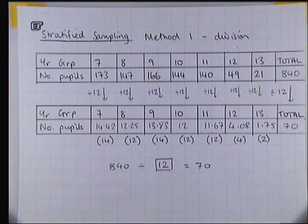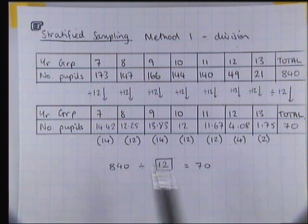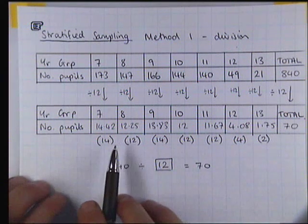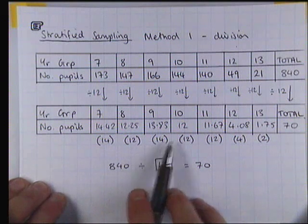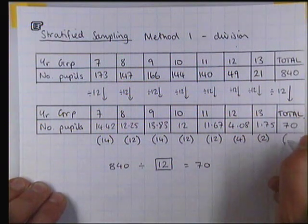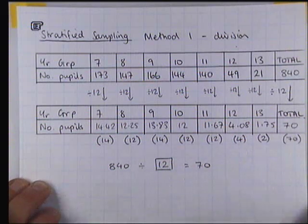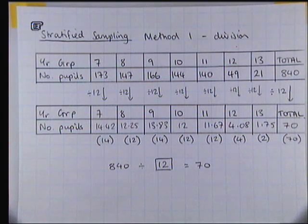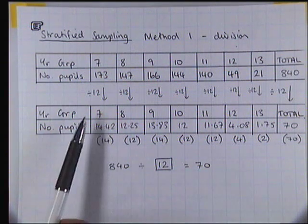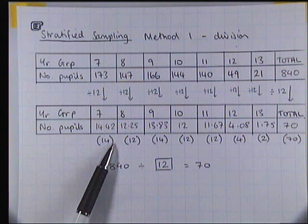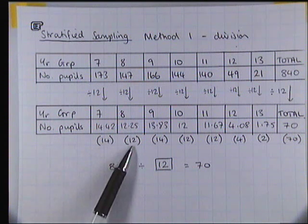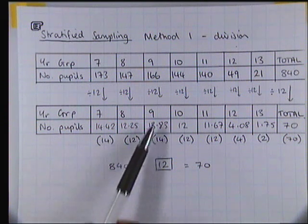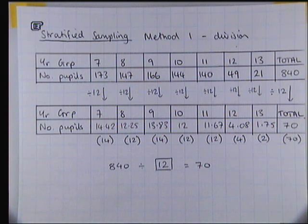Let's just check what these rounded figures add up to. We've got 14 plus 12 plus 14 plus 12 plus 12 plus 4 plus 2. They do indeed make 70, which is good. So this means the total number of year sevens that this person wants to ask will be 14. The total number of year eights that this person will want to ask is 12. Total number of year nines is 14, etc.